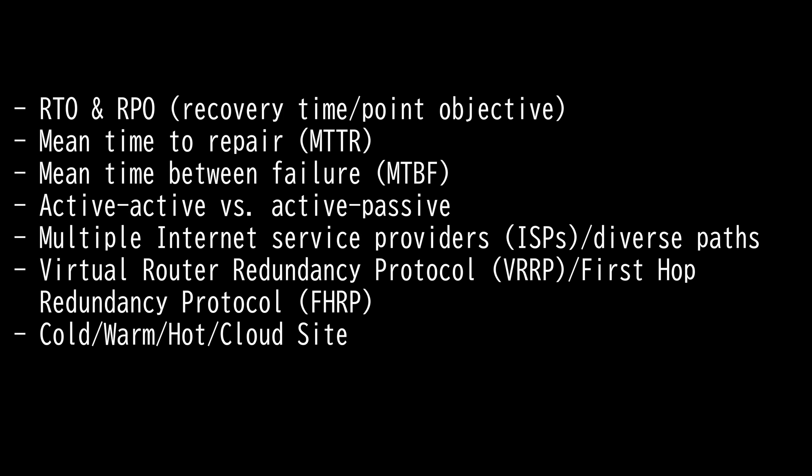Think of cold as just an empty building and hot as a fully loaded building. Sitting between hot and cold is the warm site. A warm site has equipment like computers, but it is not configured and ready to go — data might need to be upgraded or other manual interventions may be needed to get the network operational again. One of the newer sites being marketed is a cloud site. Similar to a warm site, it is available when needed but requires configuration. The key difference is that a warm site is dedicated to the company, while a cloud site is controlled by a provider.